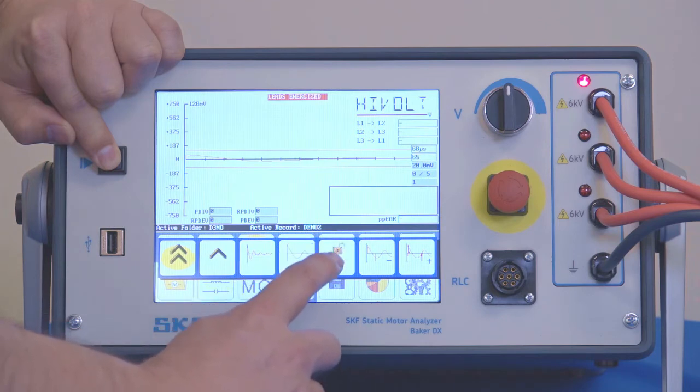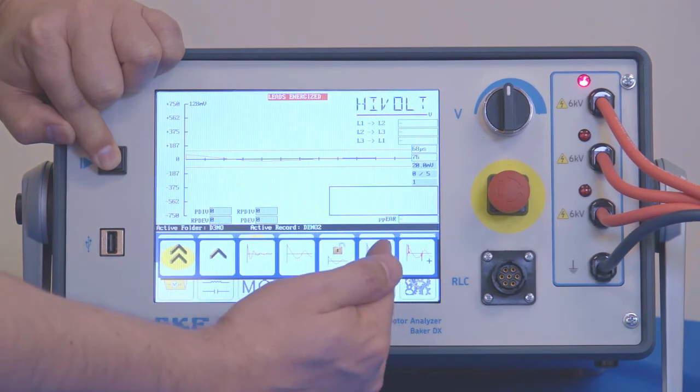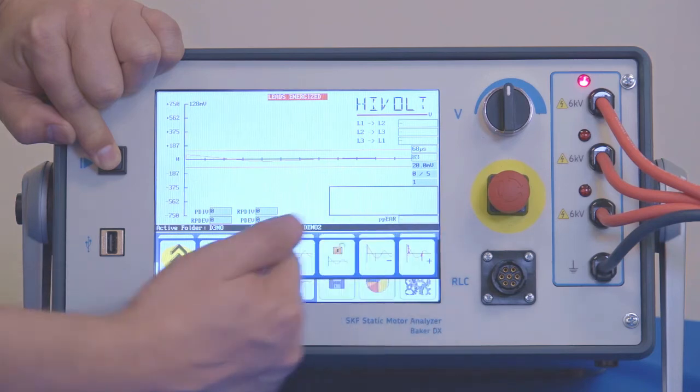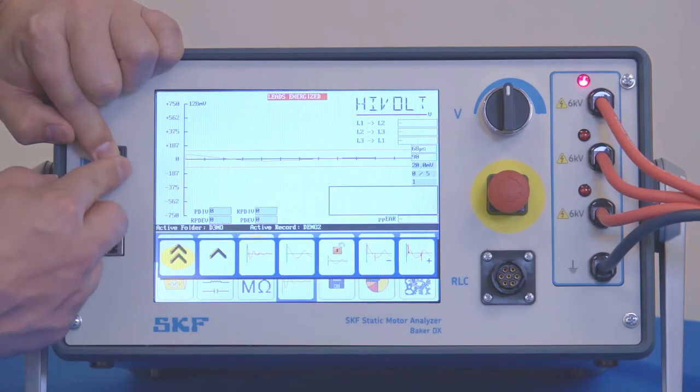This locking scales has the ability to lock the scales together, so it will push the partial discharge scale out to whatever the selected surge scale is going to be.